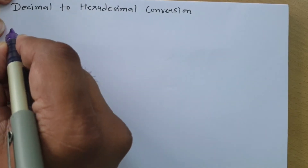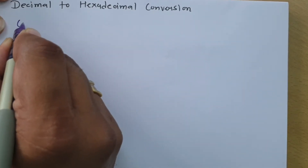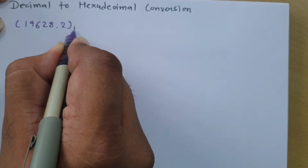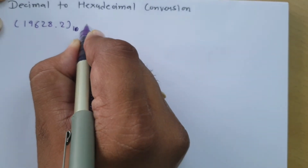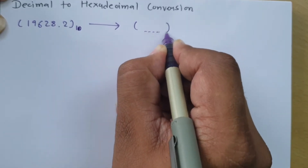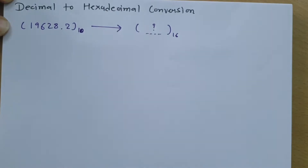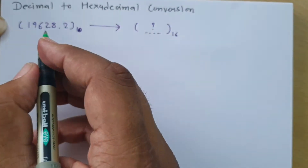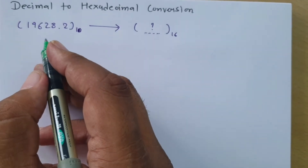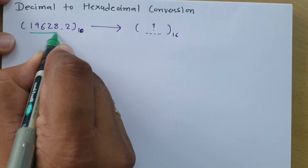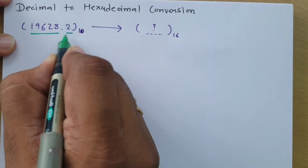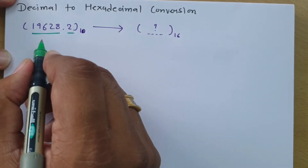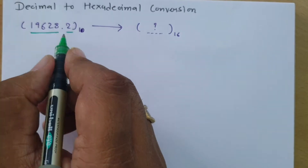The question given is decimal number 19628.2, which we need to convert into hexadecimal. We will bisect this number into two portions: portion one is the integer part, solved using the division rule, and portion two is the fractional value, solved using the multiplication rule.